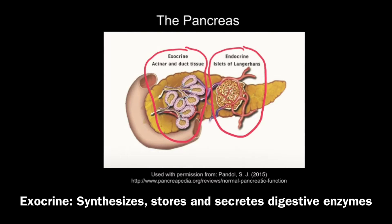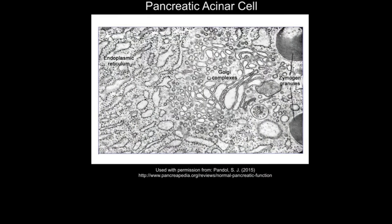The exocrine portion is made up of acinar tissue, the parts of which are known as acinar cells. It is that exocrine portion of the pancreas that we're going to look at in more detail here, knowing that these acinar cells are involved in synthesizing, storing, and secreting digestive enzymes.